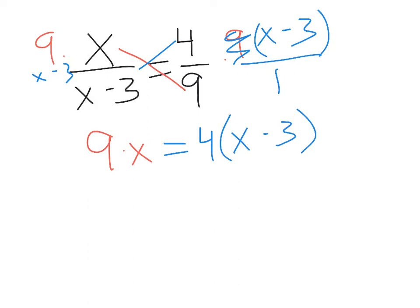Make sure you place the x minus 3 in parentheses because you do need to distribute. So now I have 4x minus 12 equals 9x. I'm going to now subtract 4x from each side.